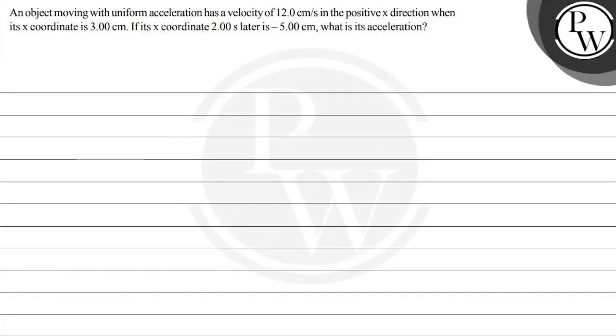Hello Bacho, let's read the question first. The question says an object moving with uniform acceleration has a velocity of 12.0 centimeters per second in the positive x direction when its coordinate is 3 centimeters. If its x coordinate 2 seconds later is minus 5.00 centimeters, what is its acceleration?